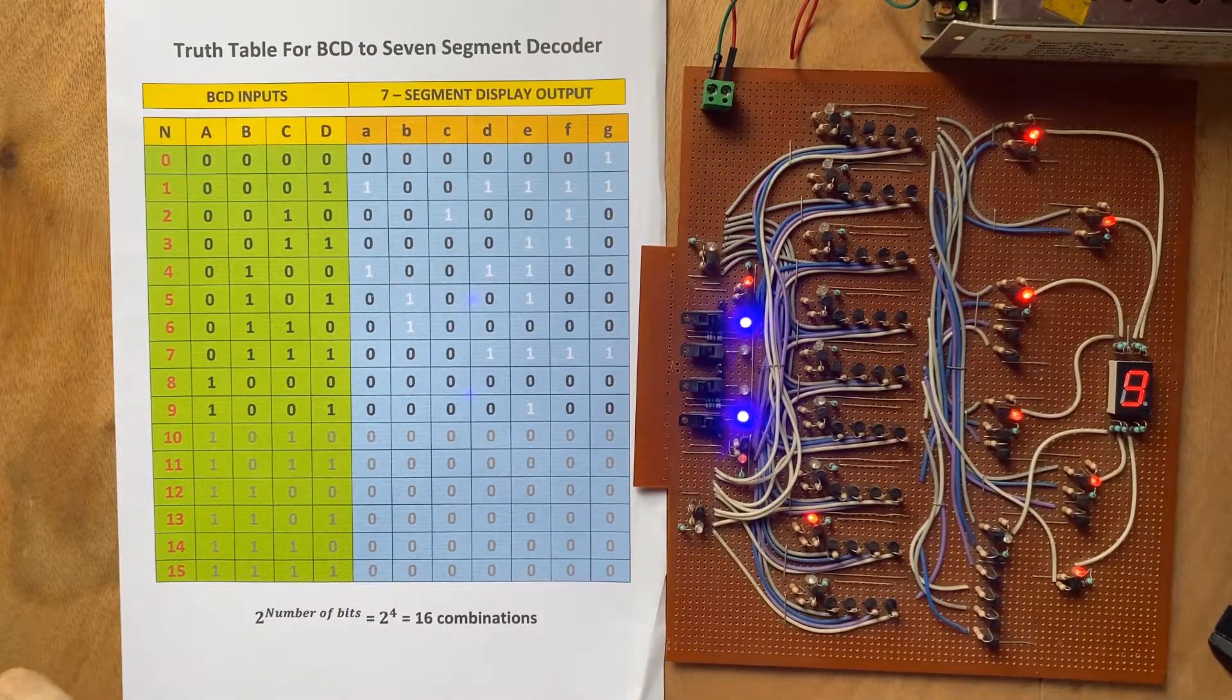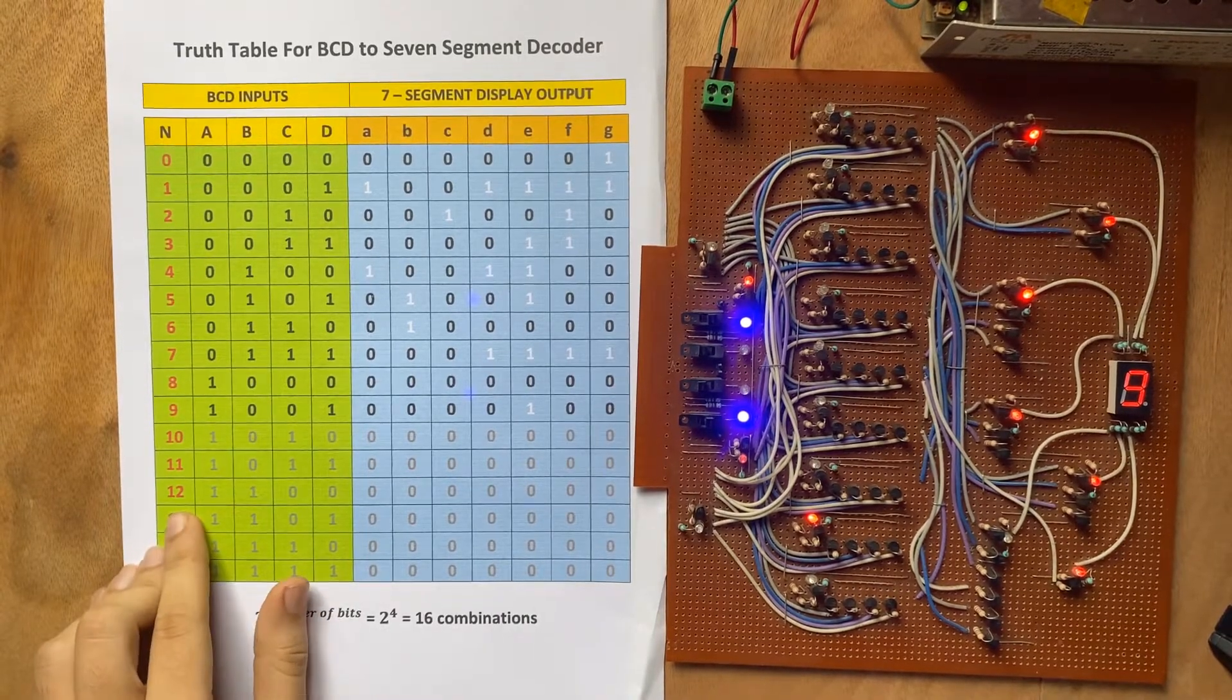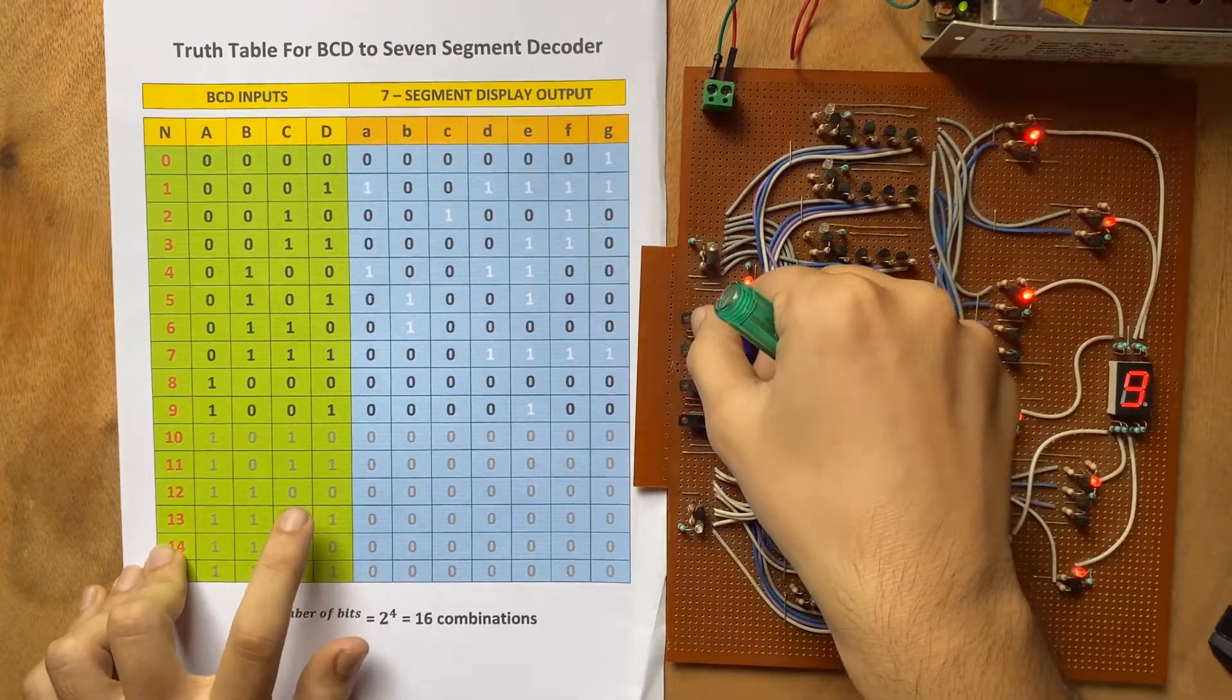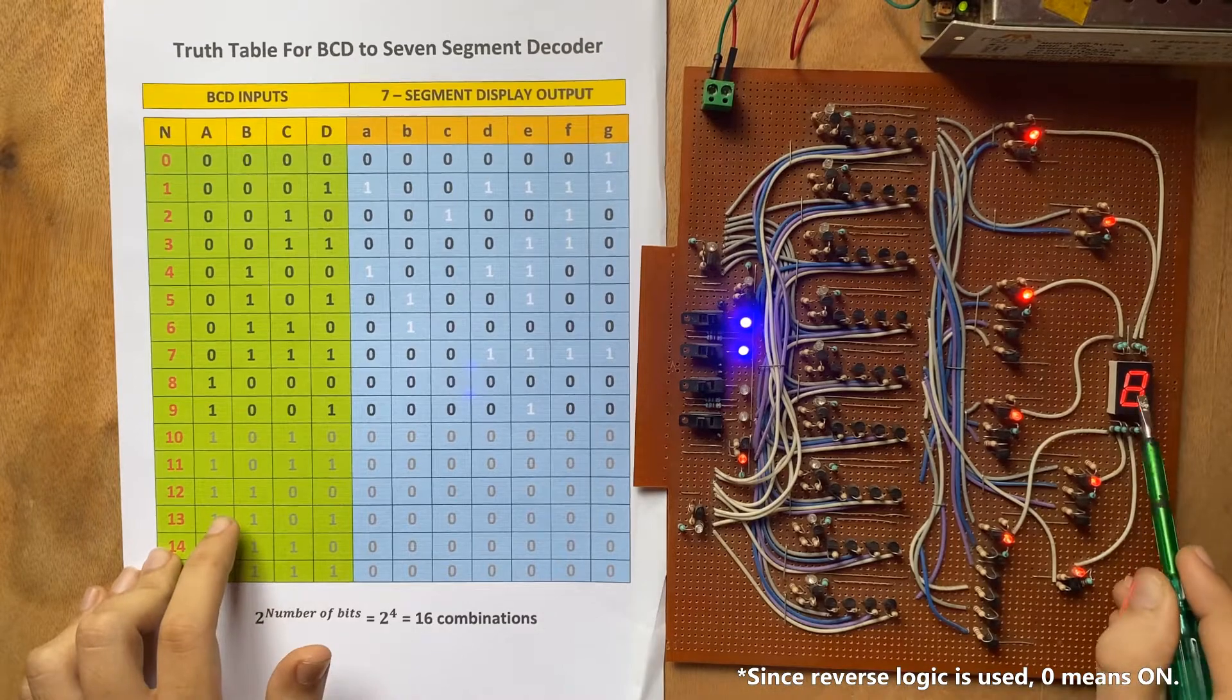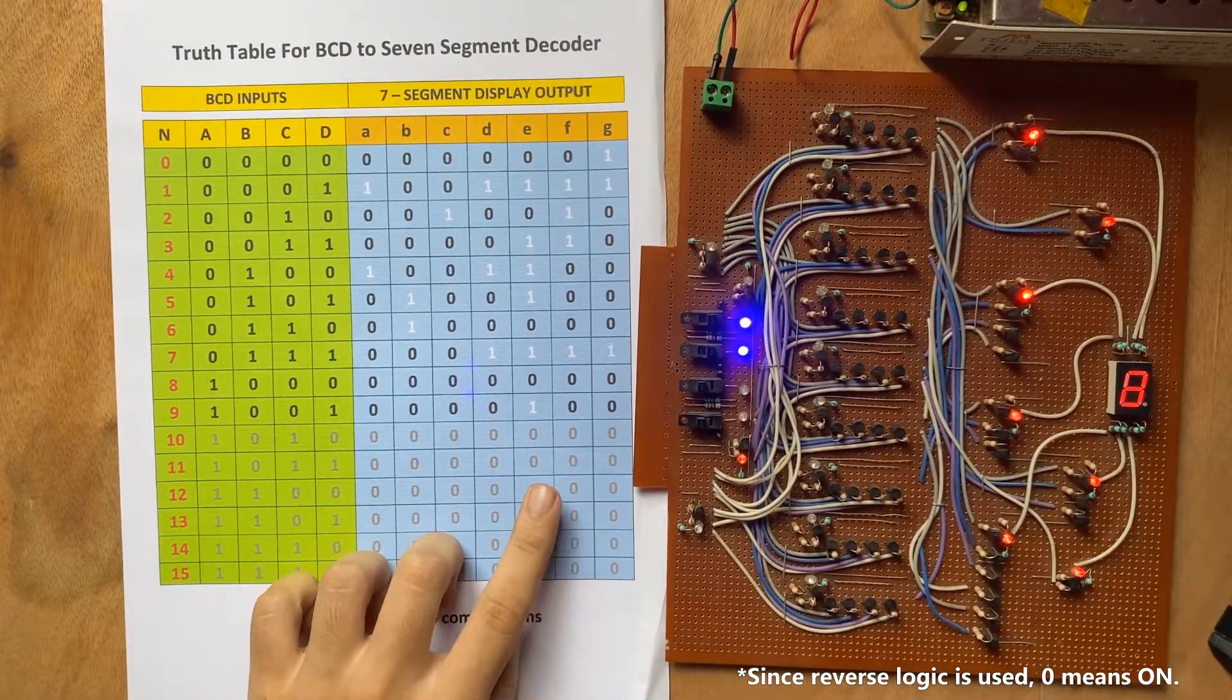Now this is BCD to the 7-segment decoder and we cannot go further than this. So let me try 12, so let us see 1100, so 1100. See, it is showing 8 because all of the inputs are on and that's why it is showing 8.